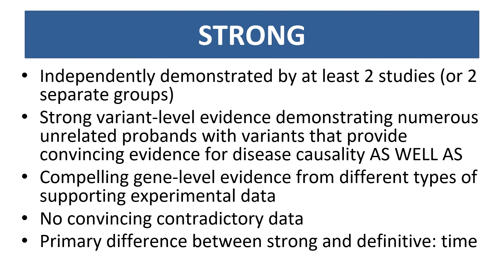Such evidence includes strong variant-level evidence demonstrating numerous unrelated probands with variants that provide convincing evidence for disease causality, as well as compelling gene-level evidence from different types of supporting experimental data. The distinguishing feature between strong and definitive gene disease associations is replication over time.